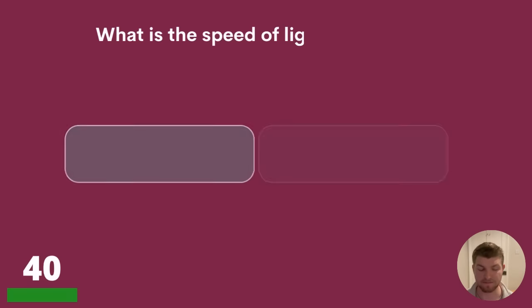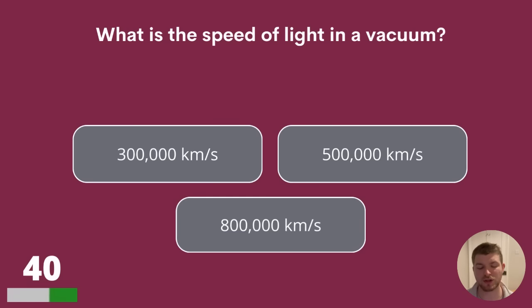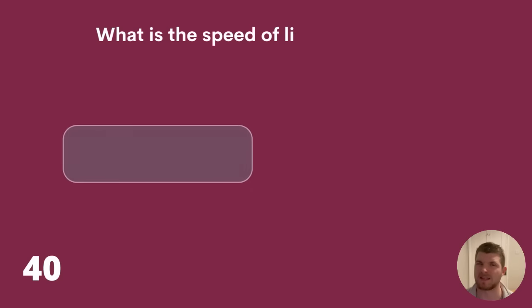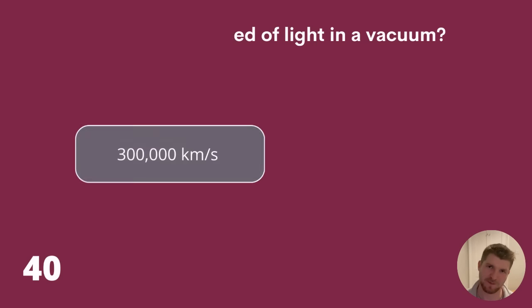Question 40. What is the speed of light in a vacuum? 300,000 kilometres a second, 500,000 kilometres a second or 800,000 kilometres a second? We're talking about a space vacuum. The answer is 300,000 kilometres a second.